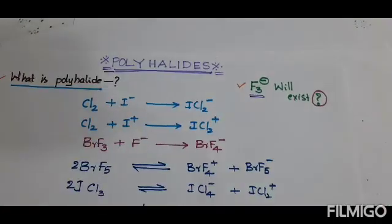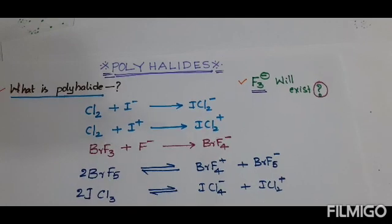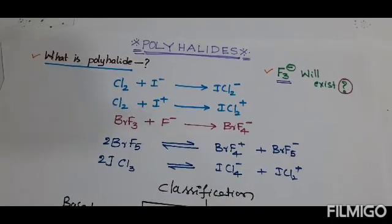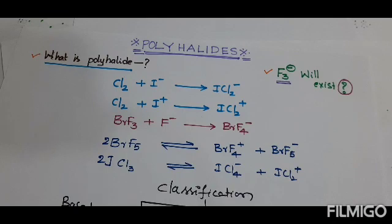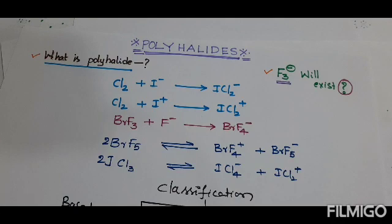Our important topic in this video is: will F3⁻ ion exist or not? Undoubtedly, F3⁻ ion will exist. But what is the proof? Cl3⁻, I3⁻, and Br3⁻ will exist because the maximum valency of those halogens can exceed one. But in the case of fluorine, it will always be one. So in what way can we explain the existence of F3⁻?